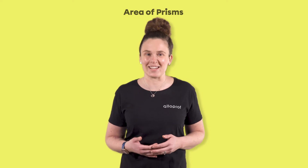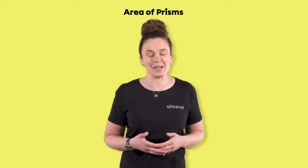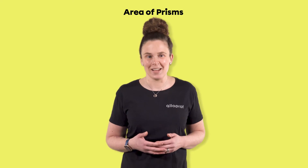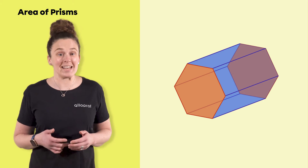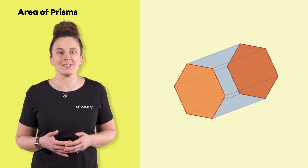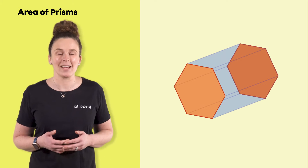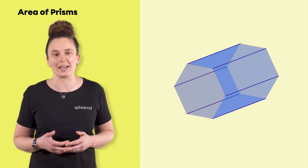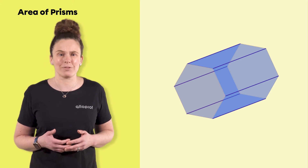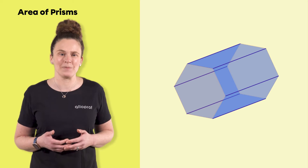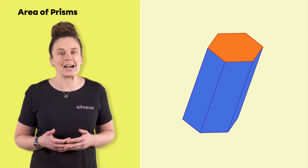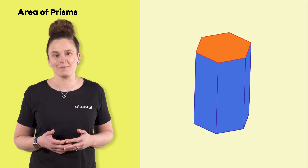When we want to cover a solid or a surface, we are looking at calculating its area. A solid can be a prism. The following is an example of a regular hexagonal prism. It has two congruent and parallel faces called bases, and its lateral faces are rectangles. A prism's lateral faces are always rectangles when it is a right prism. If it is oblique, then the lateral faces are parallelograms.